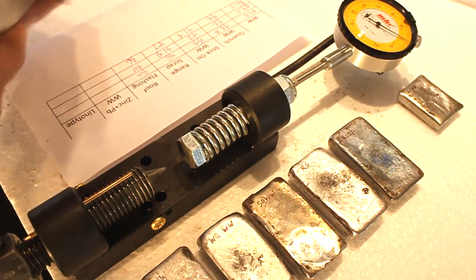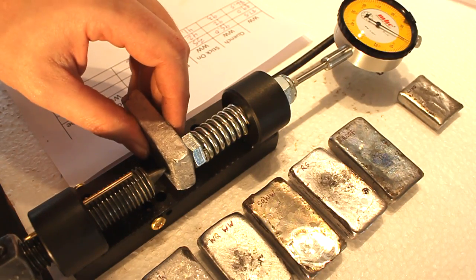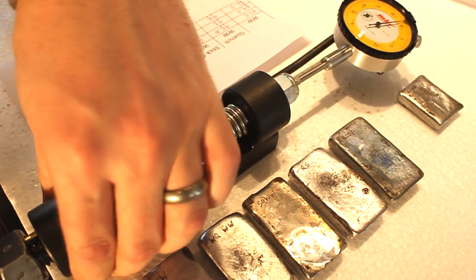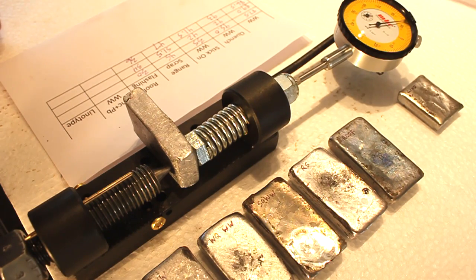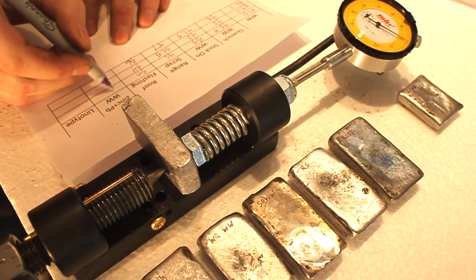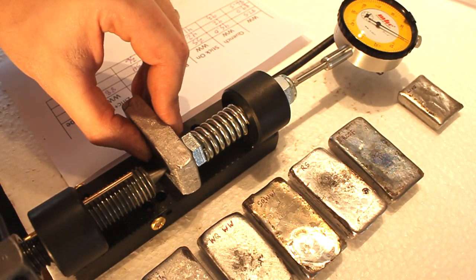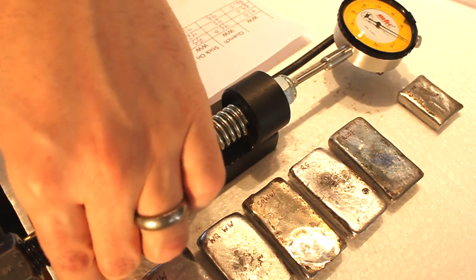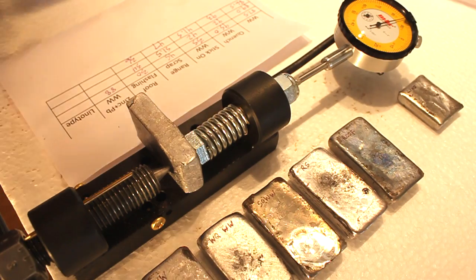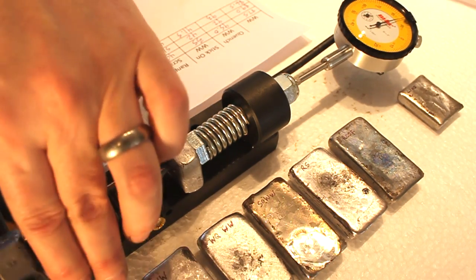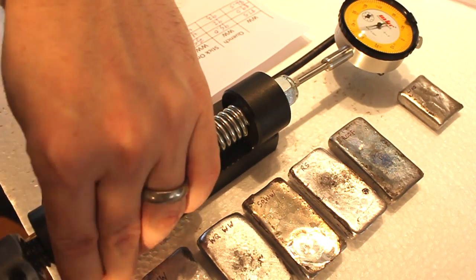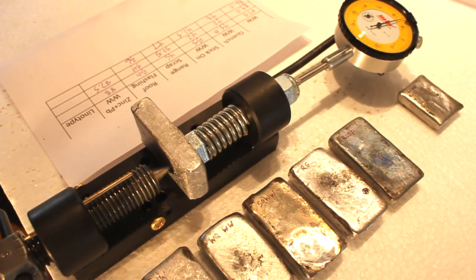Now this is the wheel weight that's been contaminated with zinc, and it is 88. 87.5. 85.